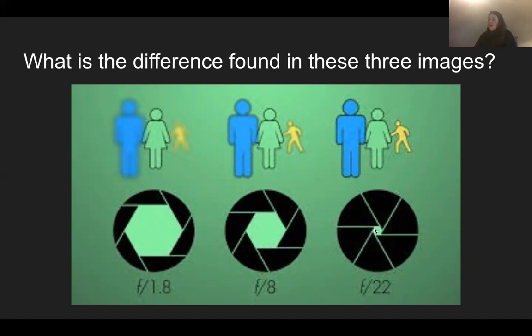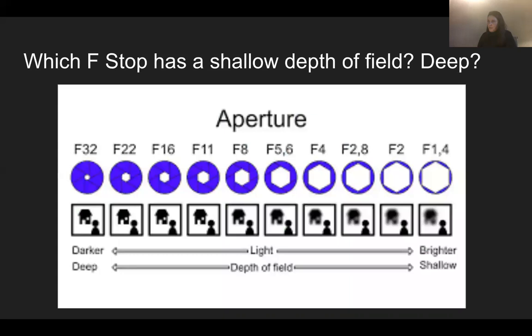With this f/22, as you can see the lens has closed a little bit more, and all objects — foreground, middle ground, and background — are all focused. So you'll hear people describe different depths of field when talking about aperture. You'll hear them say either it has a very deep depth of field or a really shallow depth of field. You can watch this video again if you need to. It's really just combining all the terms that photographers use along with the settings in our camera.